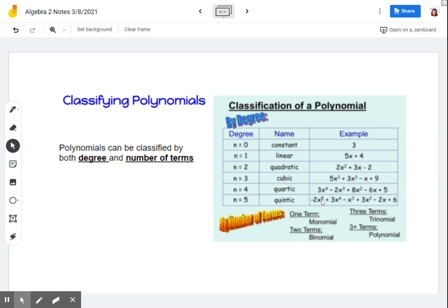If we're looking to classify a polynomial by its number of terms, then if it's just one term, so that's a constant example here, an example of just one term, we'll call that a monomial. Two terms will be considered a binomial. So our example here for linear is a binomial.